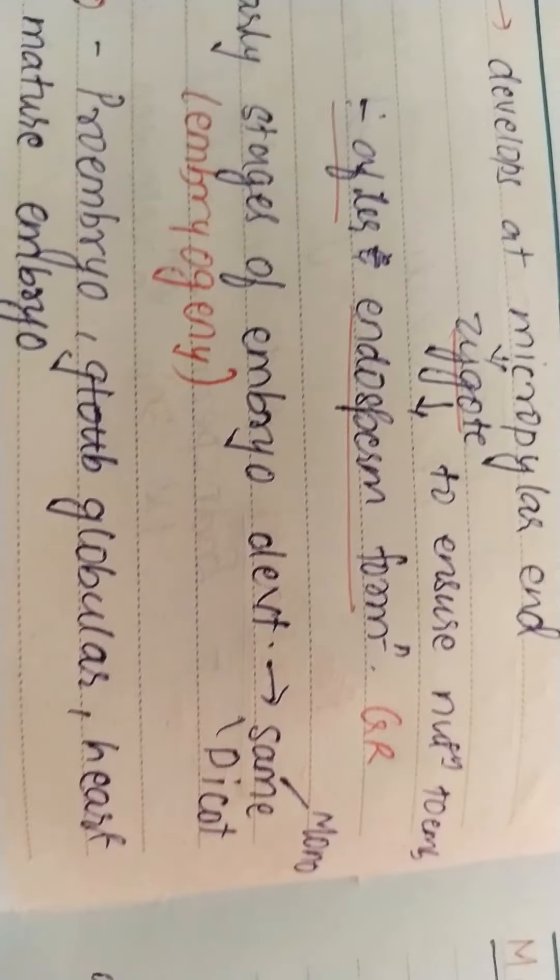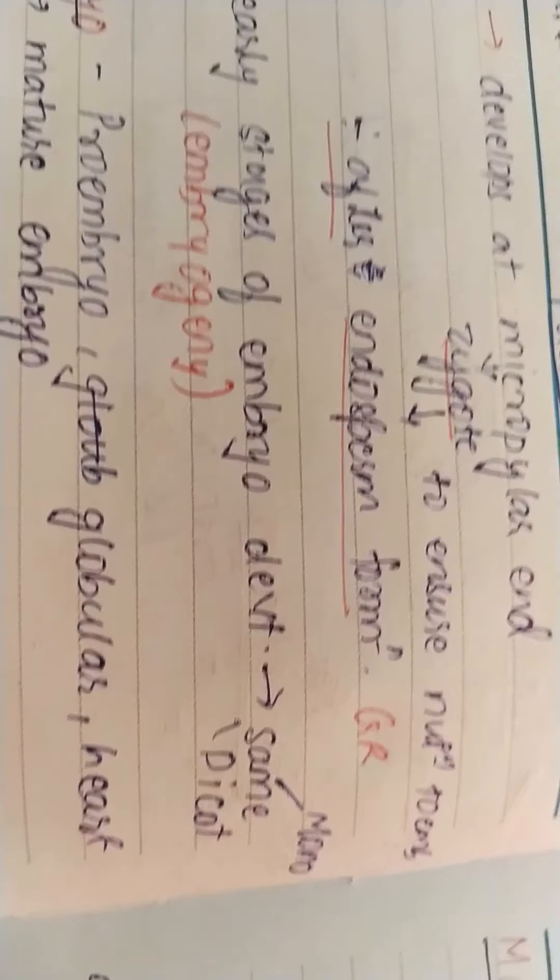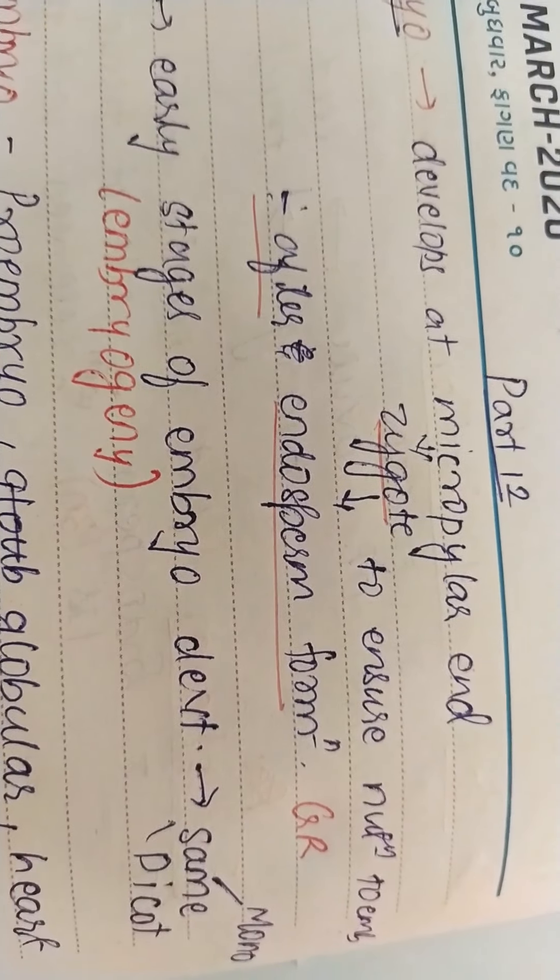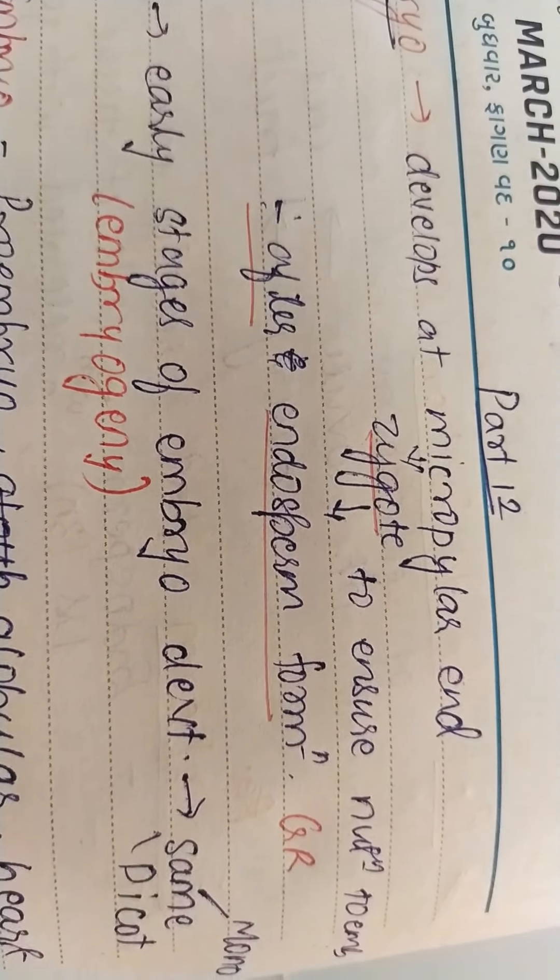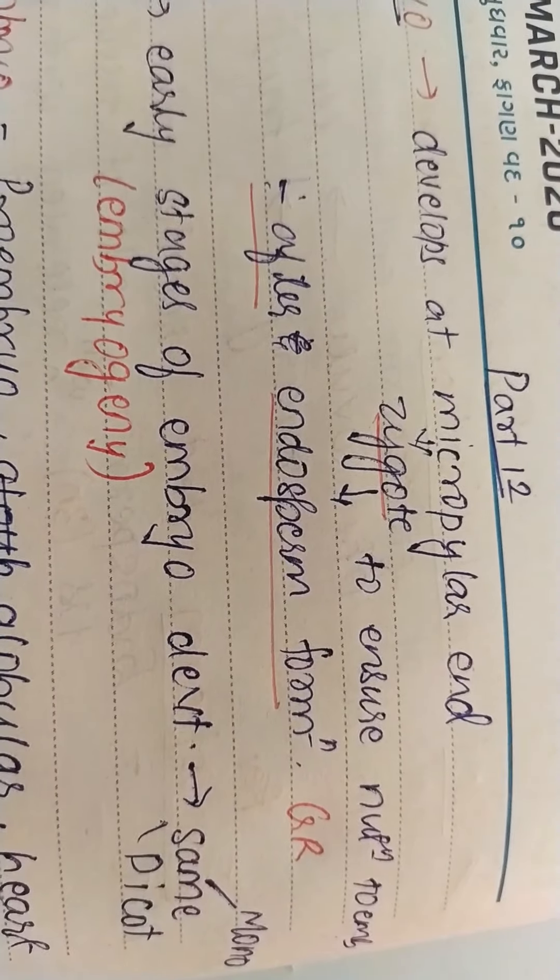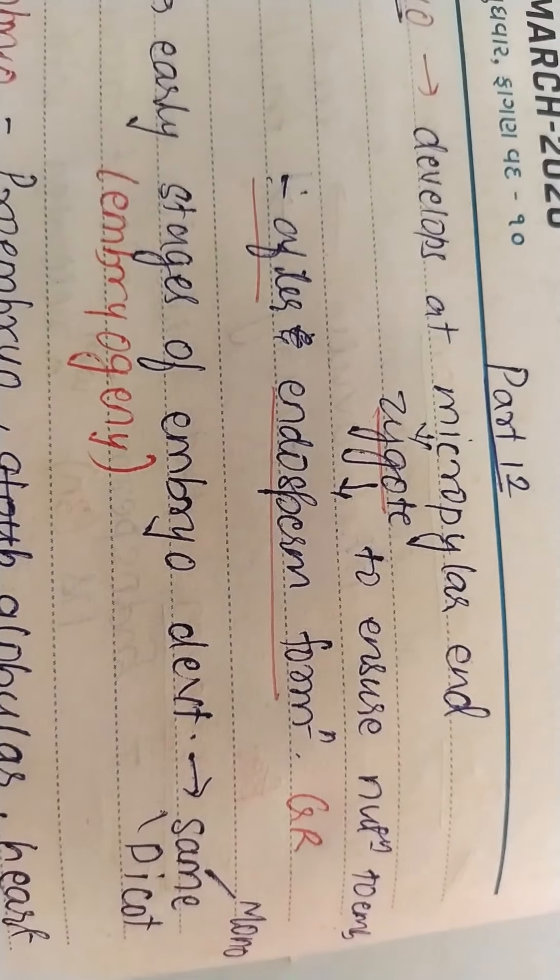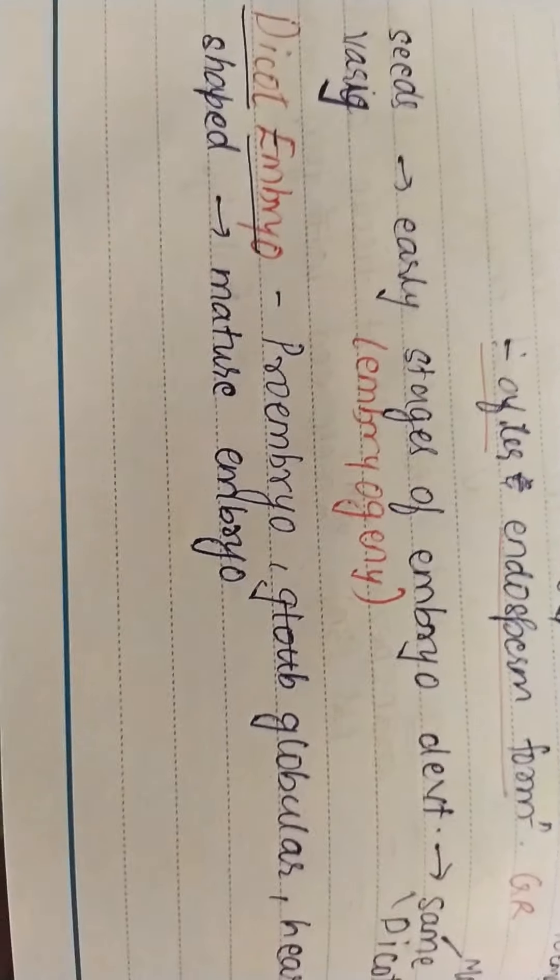That is, early embryogeny or embryogenesis, the early stages of embryo development, are similar irrespective of whether the seed is monocot or dicot. If you see the sequence that is formed in dicot embryo...